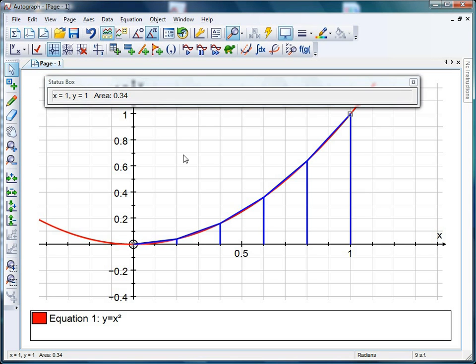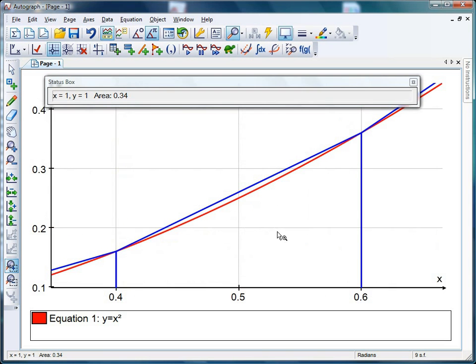Again, we can talk about is that an overestimate or an underestimate. Once again, it's quite tricky to see from there, but if you use the zoom inbox and you just drag around one of these points, you'll notice that the trapezium is over the top, so it's probably going to be an overestimate.